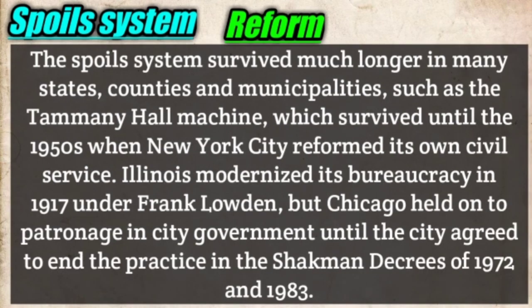The spoil system survived much longer in many states, counties, and municipalities, such as the Tammany Hall machine, which survived until the 1950s when New York City reformed its own civil service. Illinois modernized its bureaucracy in 1917 under Frank Lowden, but Chicago held onto patronage in city government until the city agreed to end the practice in the Shakman decrees of 1972 and 1983.